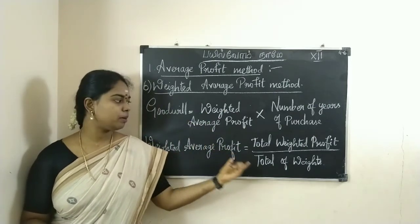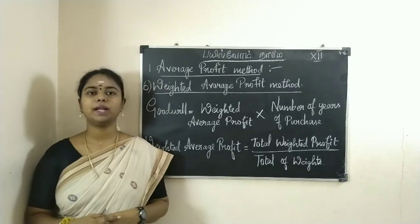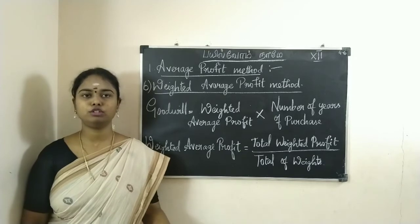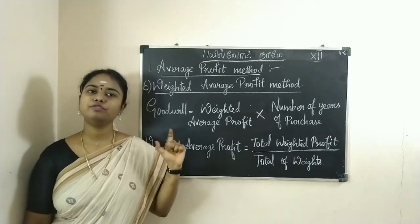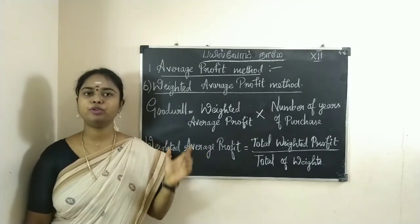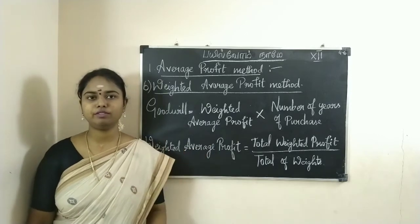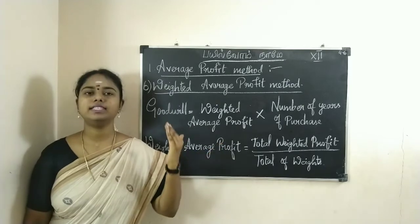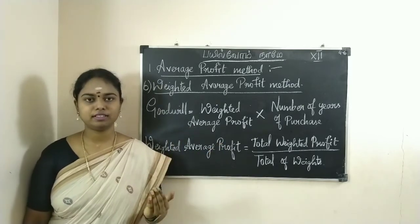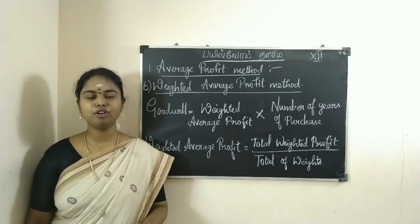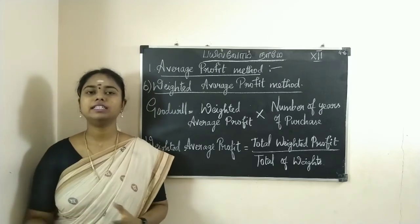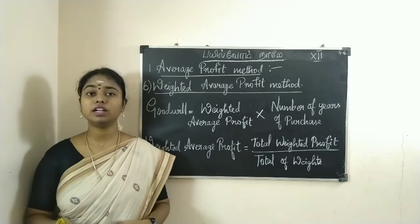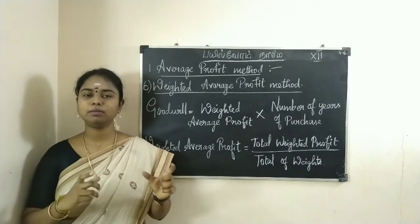We need to find out the weighted average profit and the weights. We need to find out the past 4 years of profit, from 2015 to 2019 — 2015, 2016, 2017, 2018, and 2019. That is the recent profit figures, and we need to place the weights accordingly.